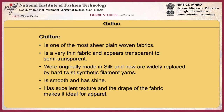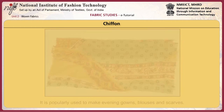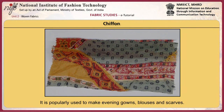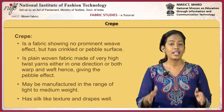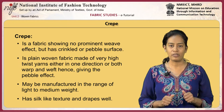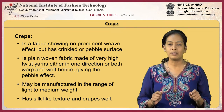Chiffon is one of the most sheer plain woven fabrics. It is a very thin fabric and appears transparent to semi-transparent. Originally chiffons were made in silk and are now widely replaced by hard twist thick filament yarns. The fabric is smooth and has shine. The texture and excellent drape of the fabric makes it ideal for apparel. Popular end uses include evening gowns, blouses and scarves.